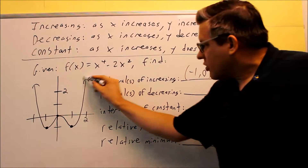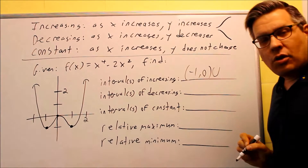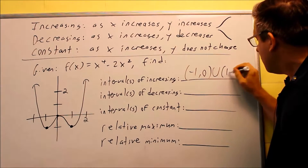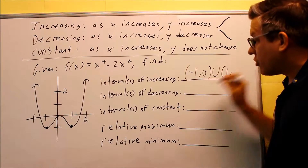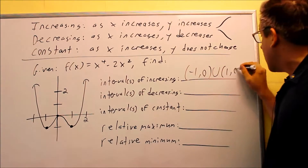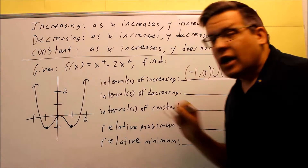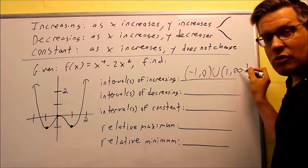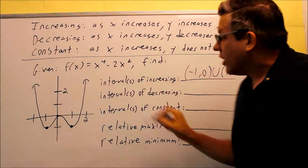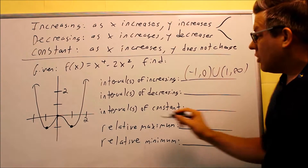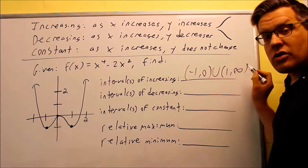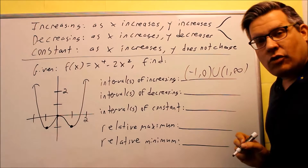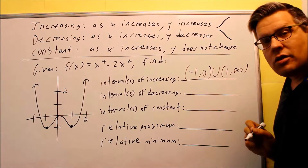We use a union because there's another section going uphill from left to right. That's between 1 and infinity — because there's an arrowhead on the end of the graph, it keeps going forever. If there were a closed circle, I would end at 2, but because of the arrowhead, it goes to infinity. So the intervals of increasing are (−1, 0) ∪ (1, ∞).